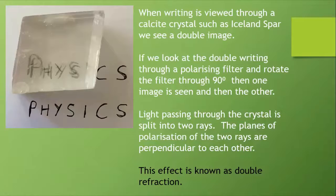When writing is viewed through a calcite crystal such as Iceland spar, we see a double image as shown here. If we look at the double writing through a polarizing filter and rotate the filter through 90 degrees and back again, then one image is seen and then the other. Light passing through the crystal is split into two rays. The planes of polarization of the two rays are perpendicular to each other. It's an interesting effect known as double refraction.